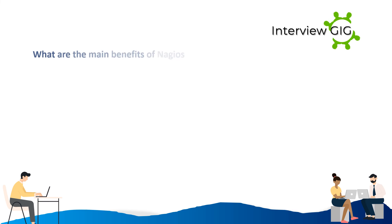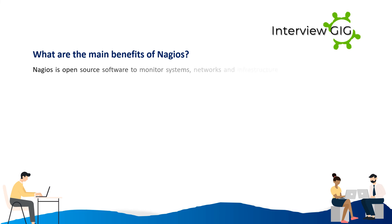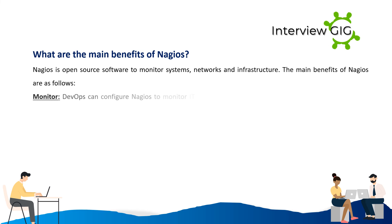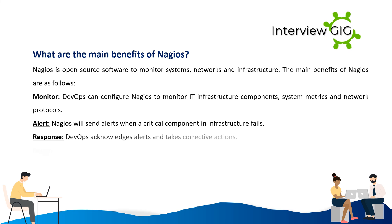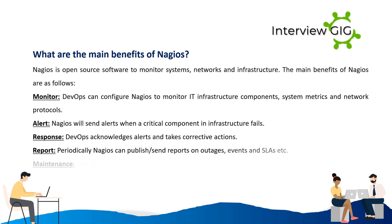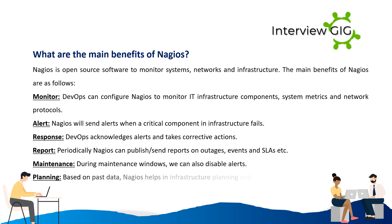Nagios is open-source software to monitor systems, networks, and infrastructure. Main benefits include: Monitor — configure Nagios to monitor IT infrastructure components, system metrics, and network protocols. Alert — Nagios sends alerts when a critical component fails. Response — DevOps acknowledges alerts and takes corrective actions. Report — Nagios periodically publishes and sends reports on outages, events, and SLAs. Maintenance — alerts can be disabled during maintenance windows. Planning — based on past data, Nagios helps with infrastructure planning and upgrades.